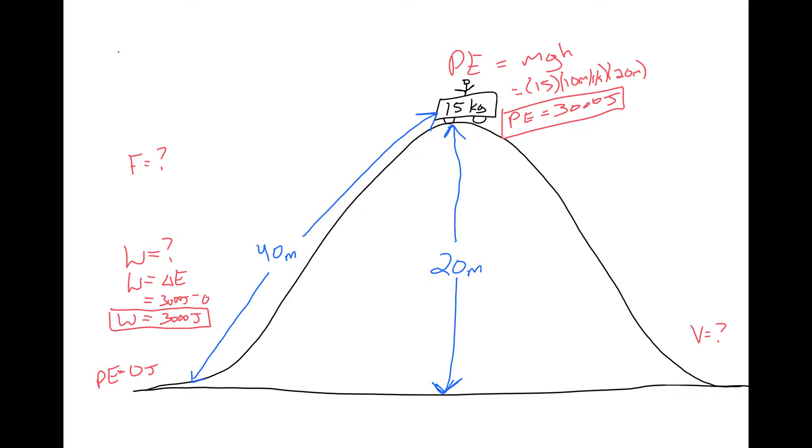All right, so if we did 3,000 joules of work, and I want to know if it went all the way up this hill along the edge there, how much force did I need to do that work? Well, not only is work the change in energy, but work is a force applied through a distance. I don't know the force, but I do know it is applied through 40 meters up that hill, and the work done was 3,000 joules.